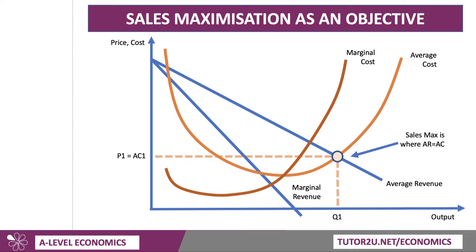That is sales maximisation — where average cost equals average revenue.